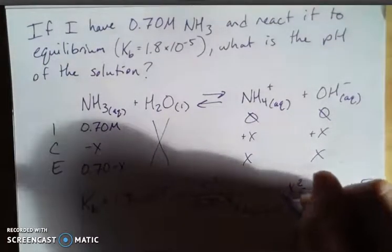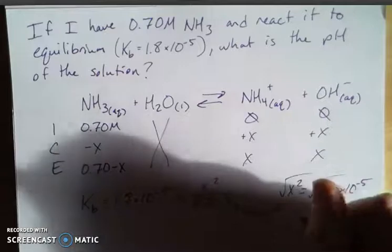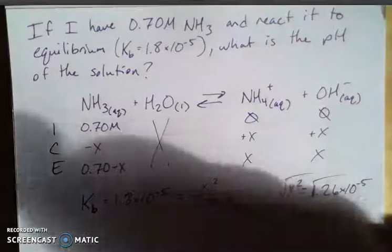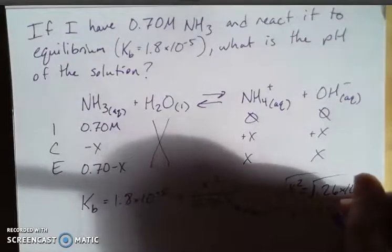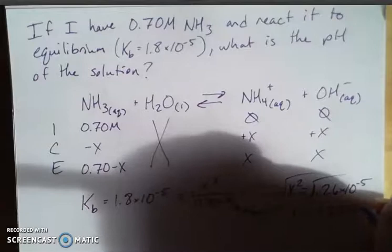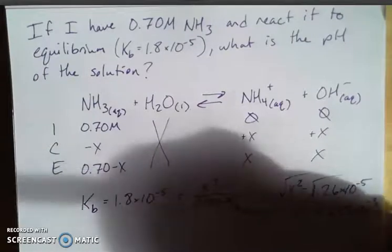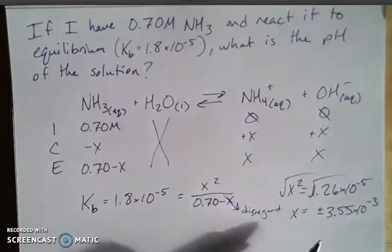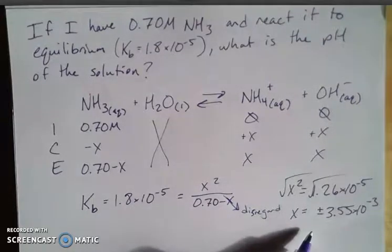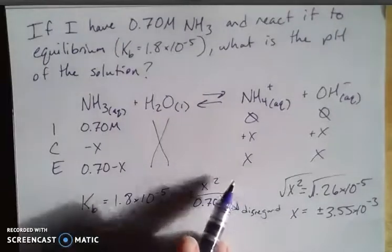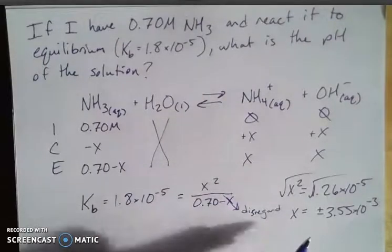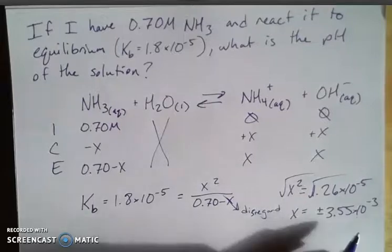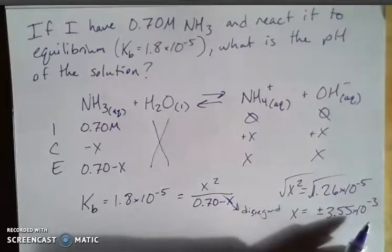So if we take the square root of both sides, we know that that will give us two answers. We have a plus or minus whatever this value is going to be, plus or minus 3.55 times 10 to the negative 3rd. We know because mathematically I can have a negative number, but physically, because these represent physical quantities, a concentration, I can't have a negative value here. So that gives me an x of 3.55 times 10 to the negative 3rd.